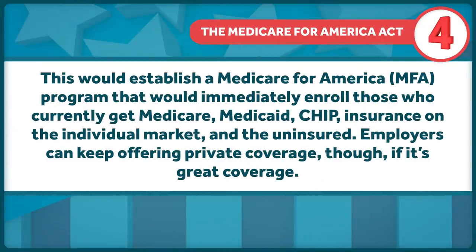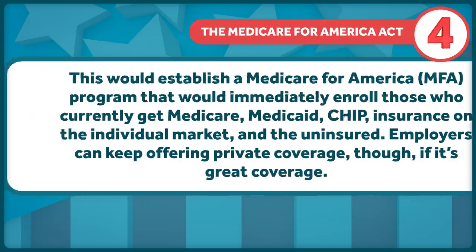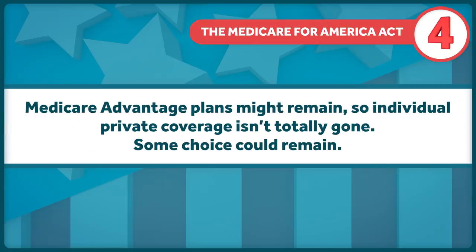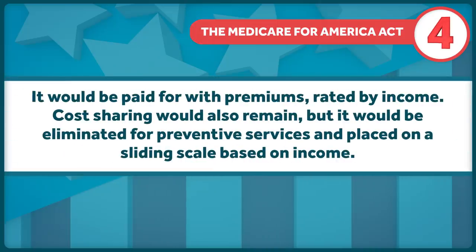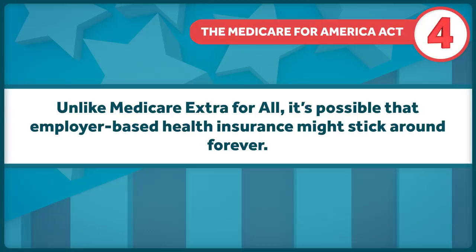The Medicare for America Act is somewhat similar. It's proposed by Representatives DeLauro and Schakowsky. It would establish a Medicare for America program that would immediately enroll those who currently get Medicare, Medicaid, CHIP, insurance on the individual market, and the uninsured. Employers can keep offering private coverage, though, if it's great coverage. Medicare Advantage plans might stick around, so individual private coverage isn't totally gone, and some choice could remain. It'd be paid for with premiums rated by income. Cost-sharing would also remain, but it would be eliminated for preventive services and placed on a sliding scale based on income. Unlike Medicare Extra for All, it's possible that employer-based health insurance might stick around forever.